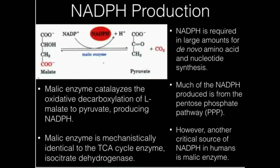NADPH is required in large amounts in a lot of biosynthetic pathways, particularly amino acid and nucleotide biosynthesis, which are very closely related in a lot of ways. It turns out we're going to need a lot of NADPH, so malic enzyme and the pentose phosphate pathway are going to provide most of that NADPH.